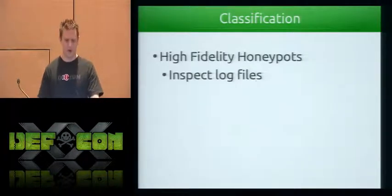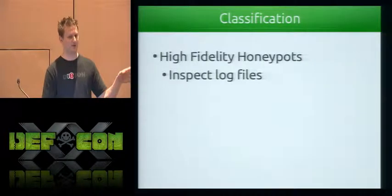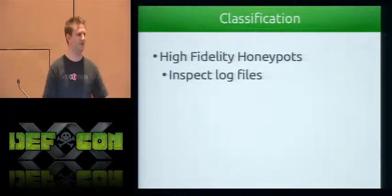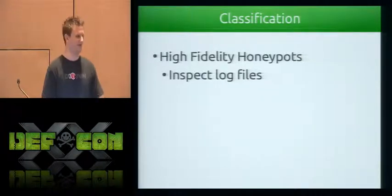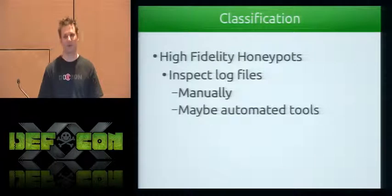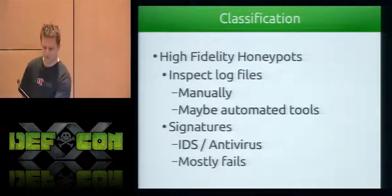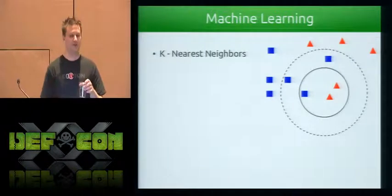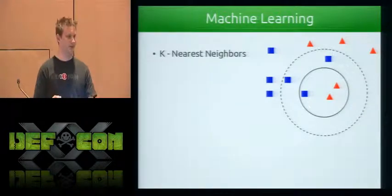Talking about high-fidelity honeypots: one of the normal ways people deal with honeypots is by having an actual physical machine set up with vulnerable services. But when your boss asks "found any bad guys yet today?" unfortunately most of the way you answer that is by inspecting log files — maybe an auto cron job that checks if the shadow file changed. Mostly it's manual, which is unfortunate. Sometimes there are automated tools, but not general purpose ones. Signatures like IDS or antivirus mostly fail for the reasons I talked about. So we want to do automated learning — machine learning.